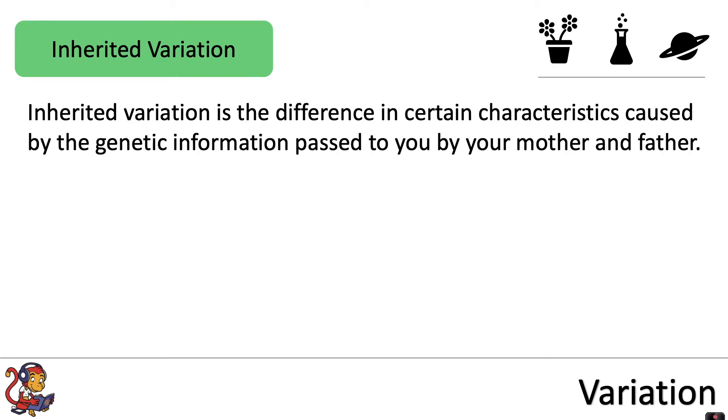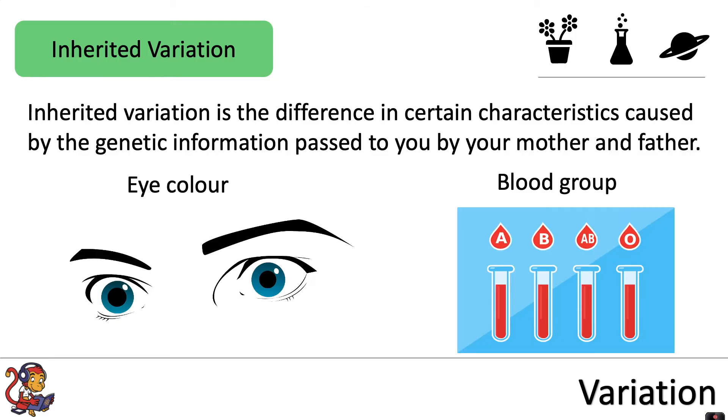Inherited variation is the difference in certain characteristics, so for example eye color and nose shape, caused by the genetic information passed to you by your mother and father. Eye color and blood group are examples of two characteristics that show variation due to the genetic information that you inherit.